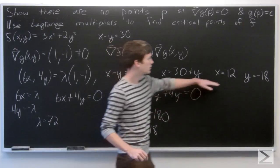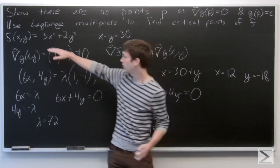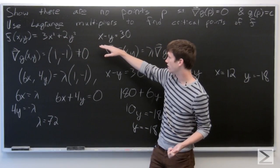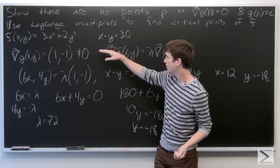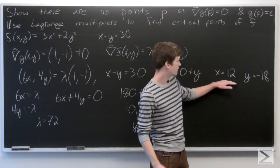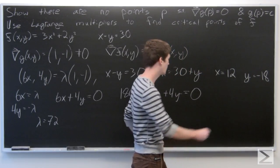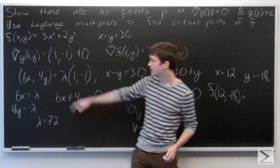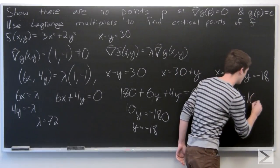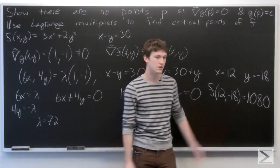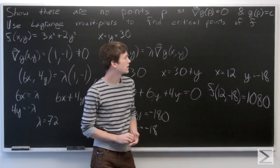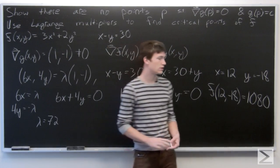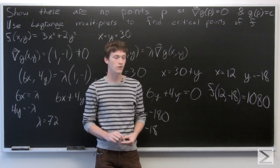So we know that we have a critical point at (12, -18). Looking at our equation for f, we see that x and y are both squared, so clearly we could have y be arbitrarily large, meaning we're going to be getting a minimum. We expect x = 12, y = -18 to be a minimum. Plugging in those values, f = 1080, which is our minimum. We showed that for all points satisfying our constraint the gradient vector is non-zero, and used Lagrange multipliers to find the critical point at x = 12, y = -18.